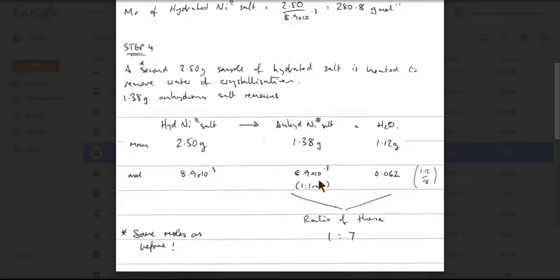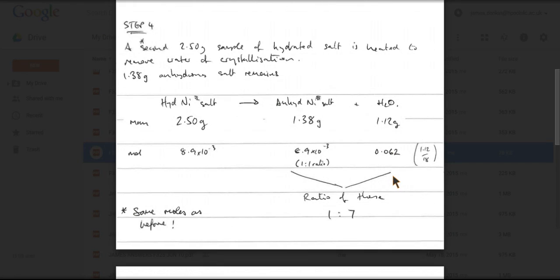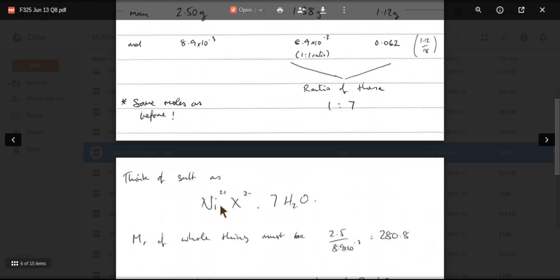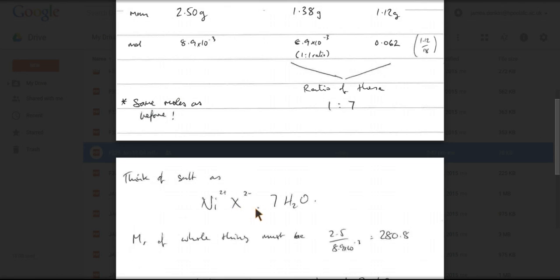So if we ratio these, we get a 1 to 7 ratio. I think it comes out at something like 1.699 or something, which is safe to round up to 1 to 7. So we now know that we've got a nickel 2 plus salt. It's got a negative ion contained in it. We don't know what that negative ion is yet, it's the whole point of the question. We've got to suggest a formula for this. But we know that for every mole of nickel 2 plus, we've got 7 moles of water.